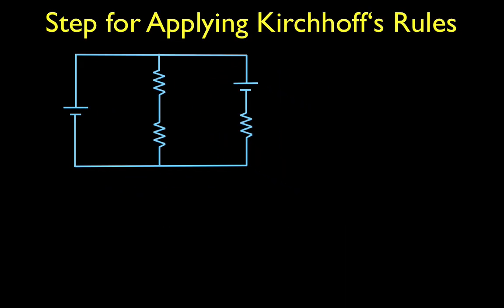These are the steps. I would say there are five steps to applying Kirchhoff's rules. The first three are really things you do before you apply the rules; steps four and five are applying the current and the voltage rule. The first thing you should do is label the nodes — identify and label them. There's one, we'll call that N1. There's that one, we'll call that N2.